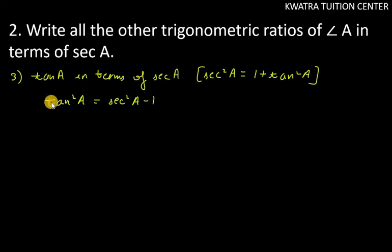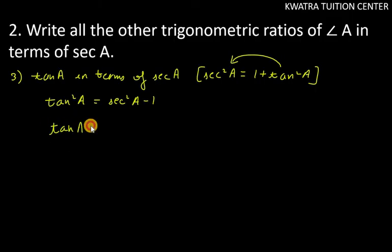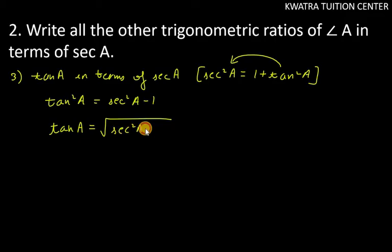We need tan A on the left side and sec A on the right side. Rearranging with the sign change gives tan²A = sec²A − 1, so taking the square root: tan A = √(sec²A − 1).